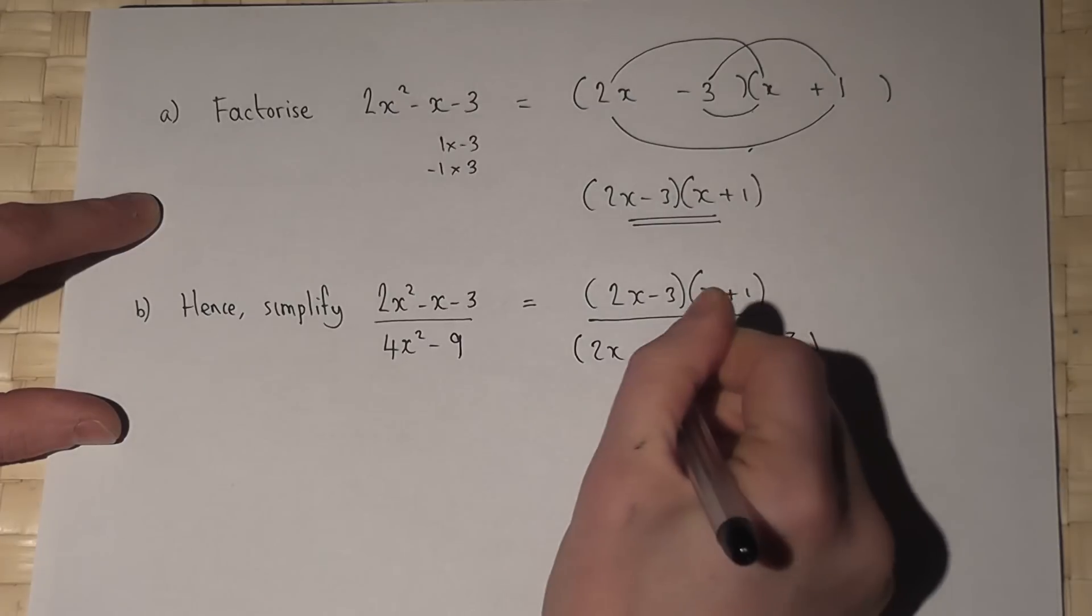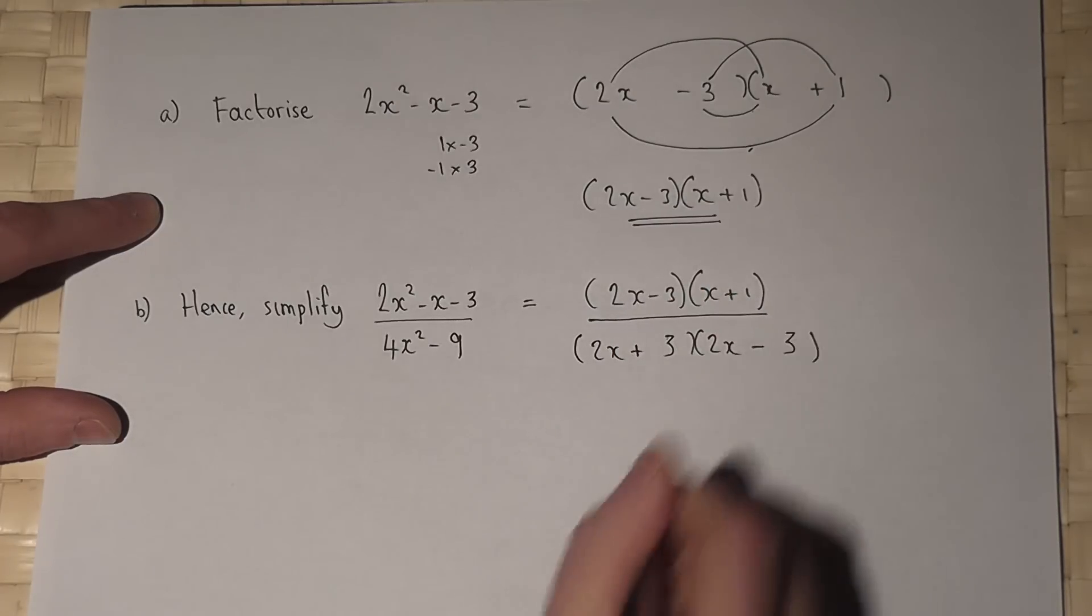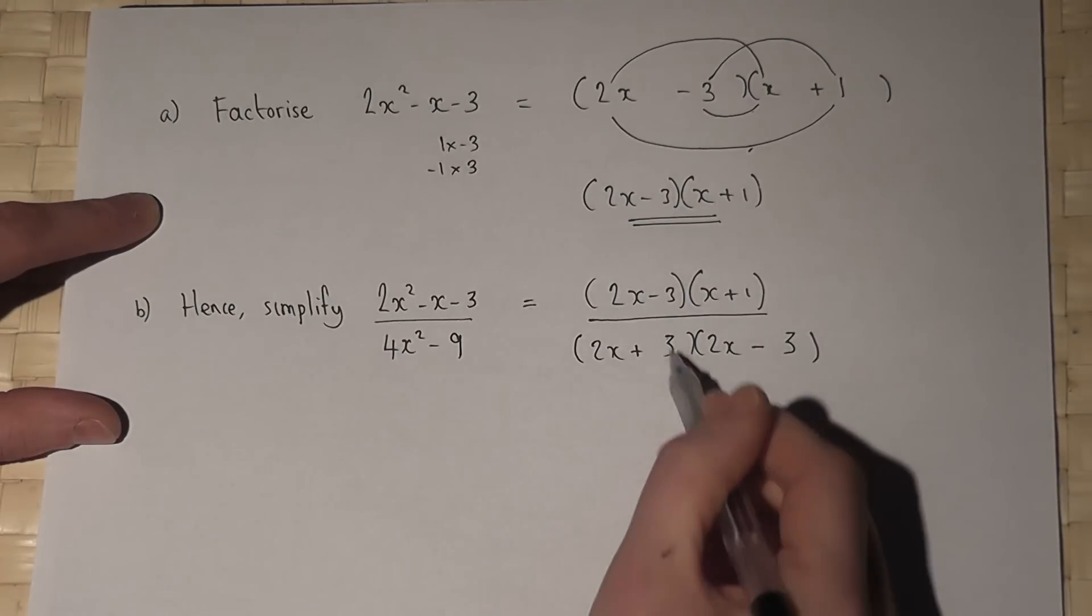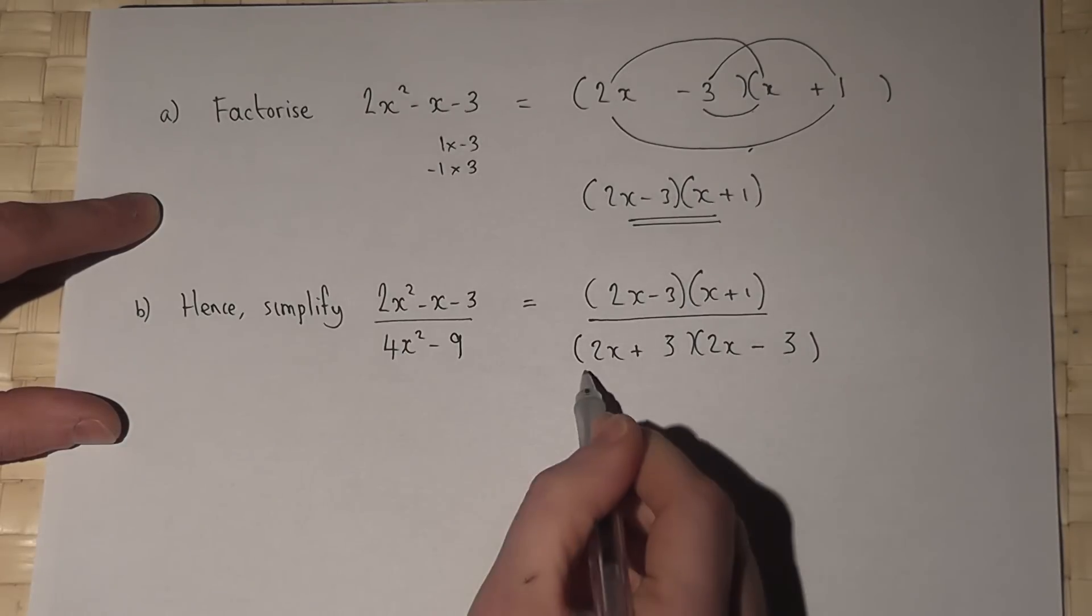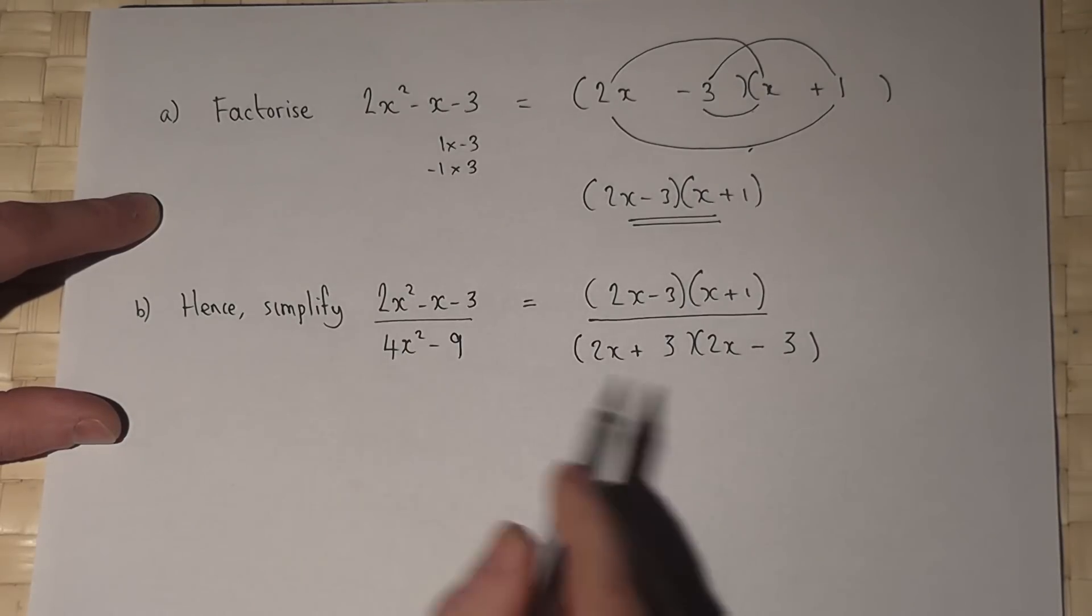It's a minus 9, so it's plus 3 and minus 3. This works because 6x take away 6x is 0x. There are no x's there.